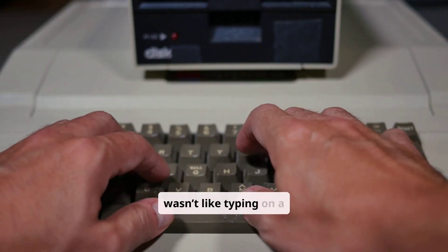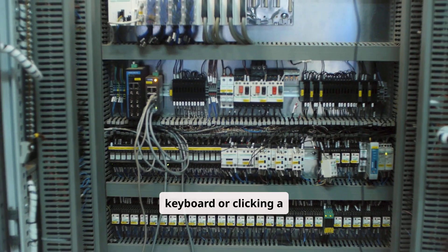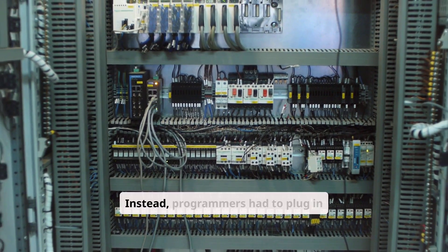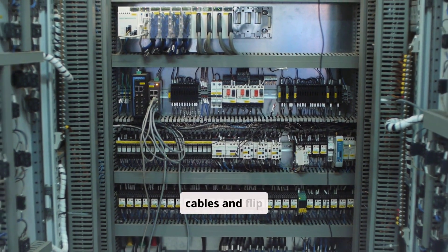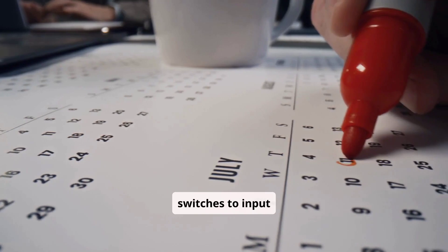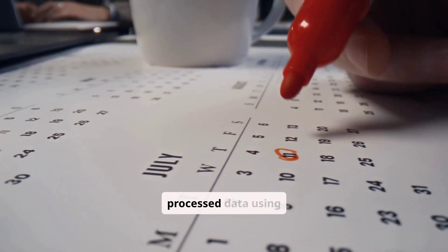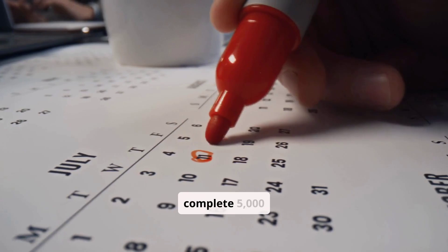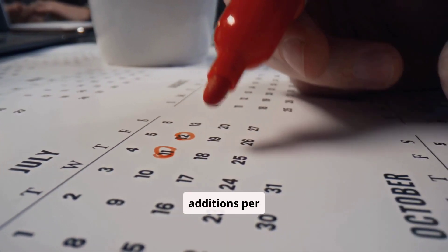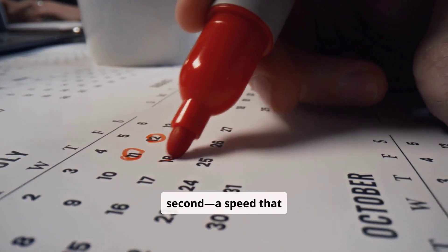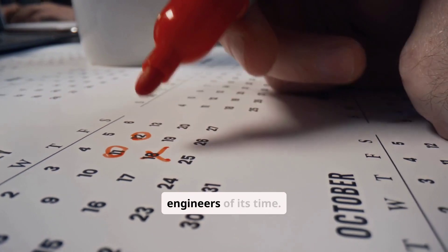Operating the ENIAC wasn't like typing on a keyboard or clicking a mouse. Instead, programmers had to plug in cables and flip switches to input instructions. It processed data using punch cards and could complete 5,000 additions per second, a speed that amazed scientists and engineers of its time.